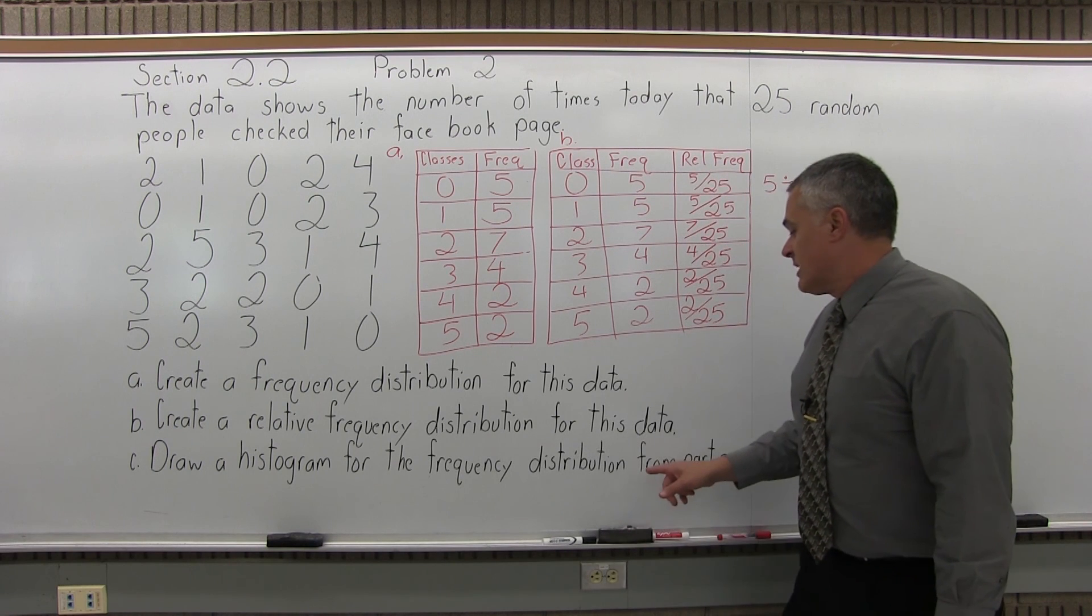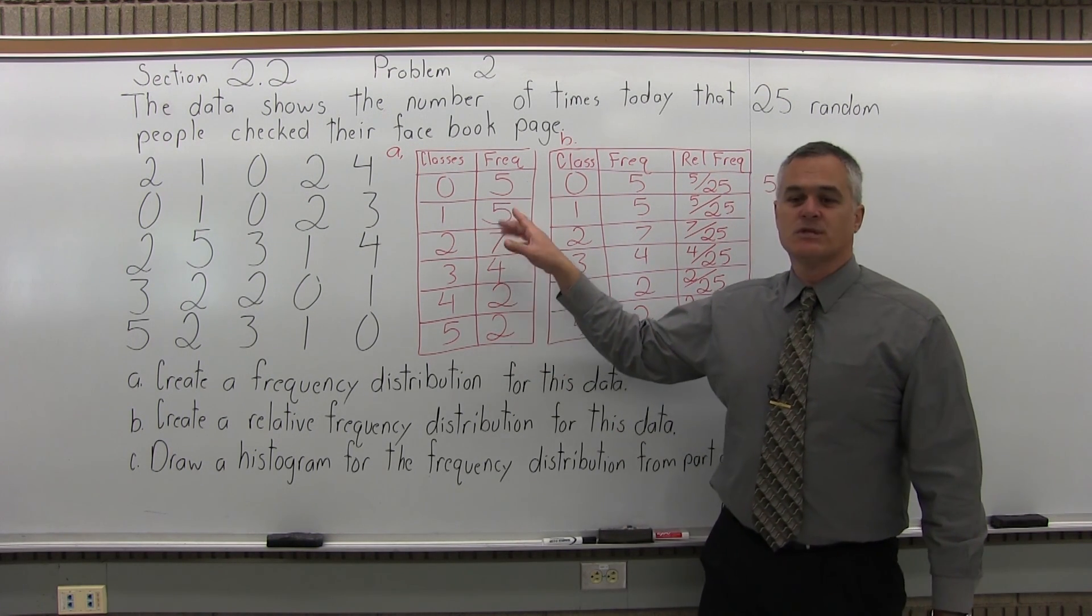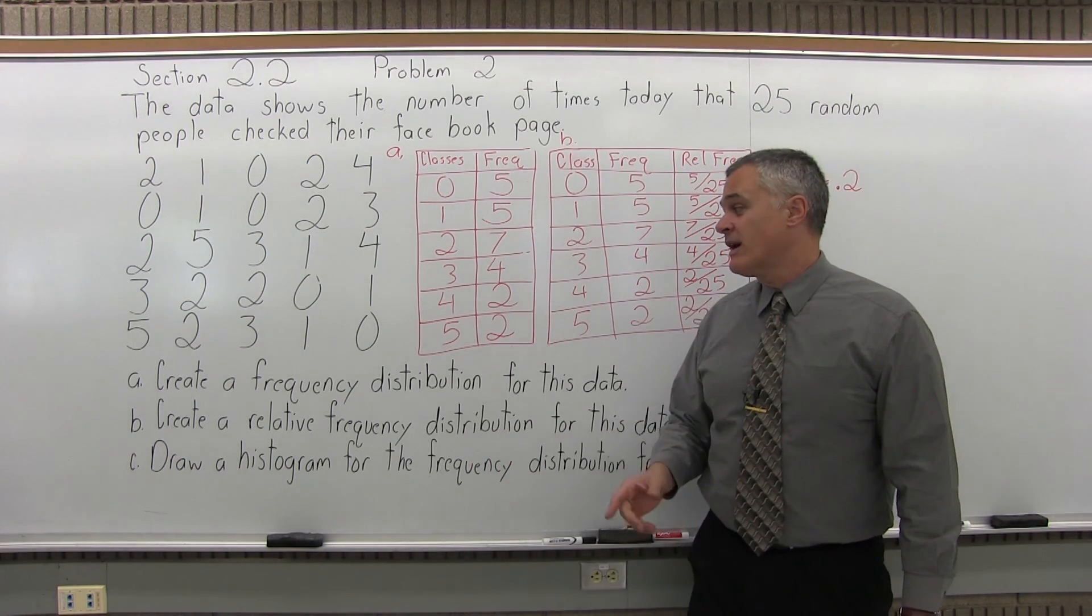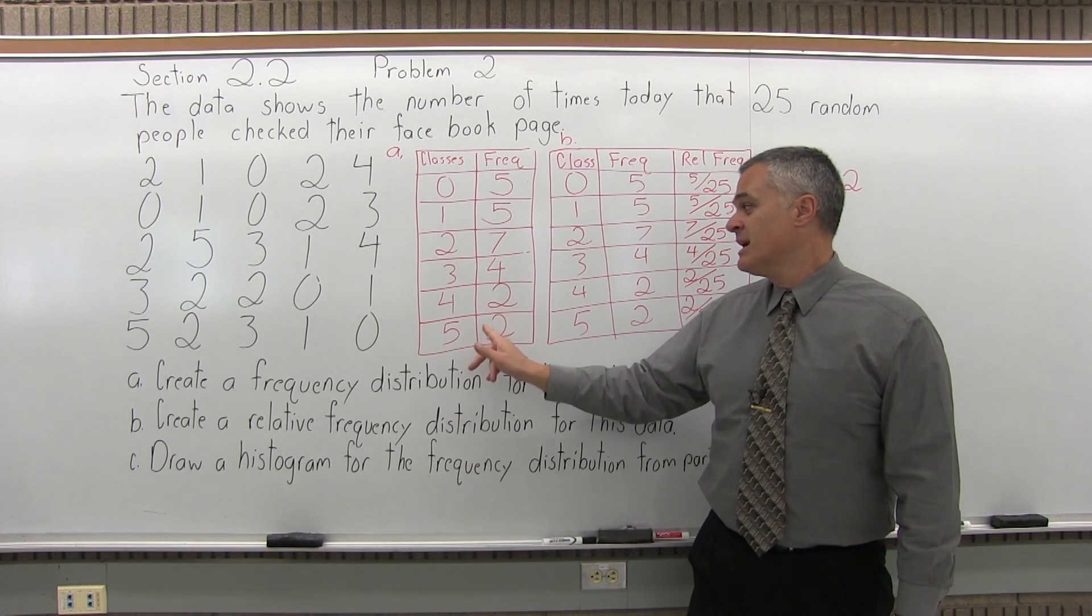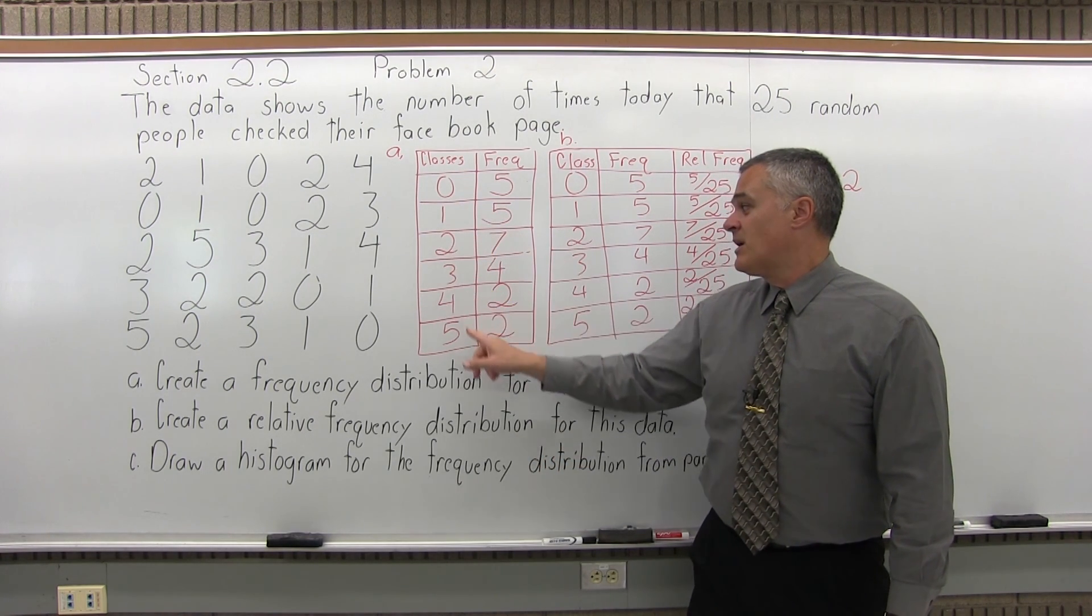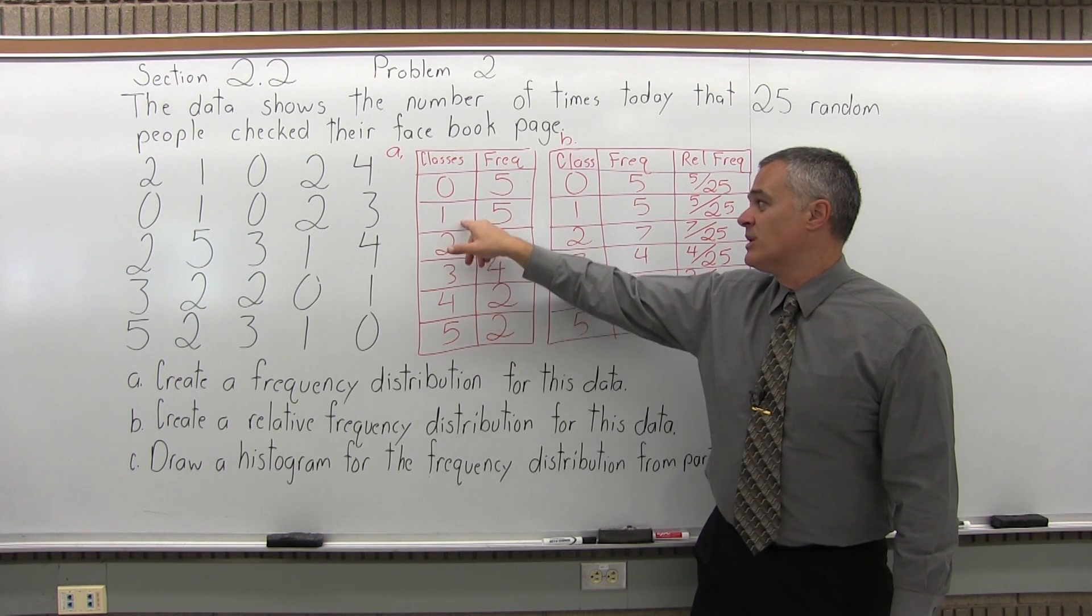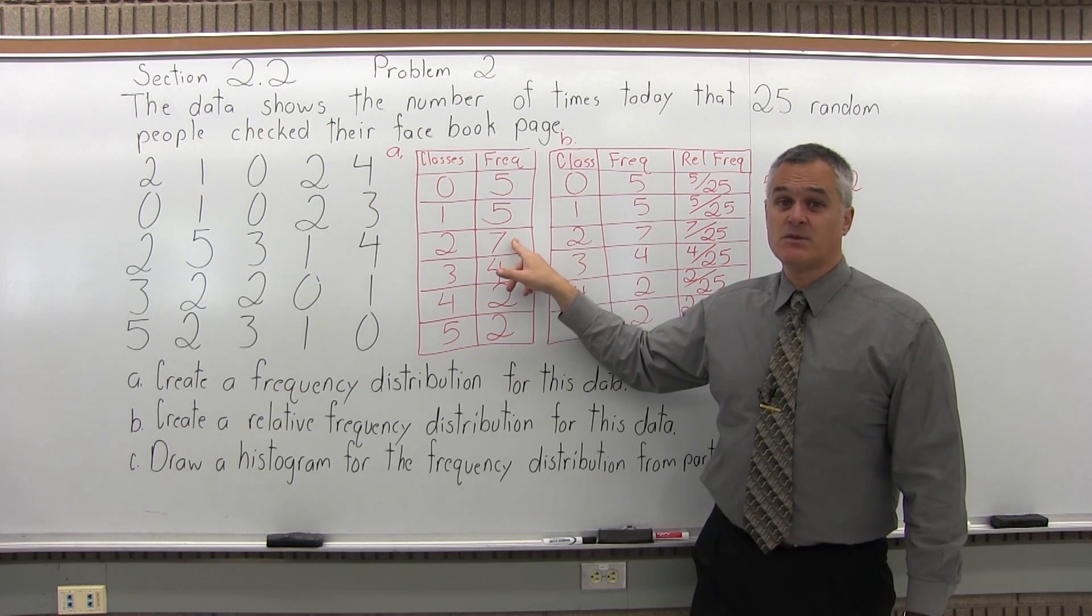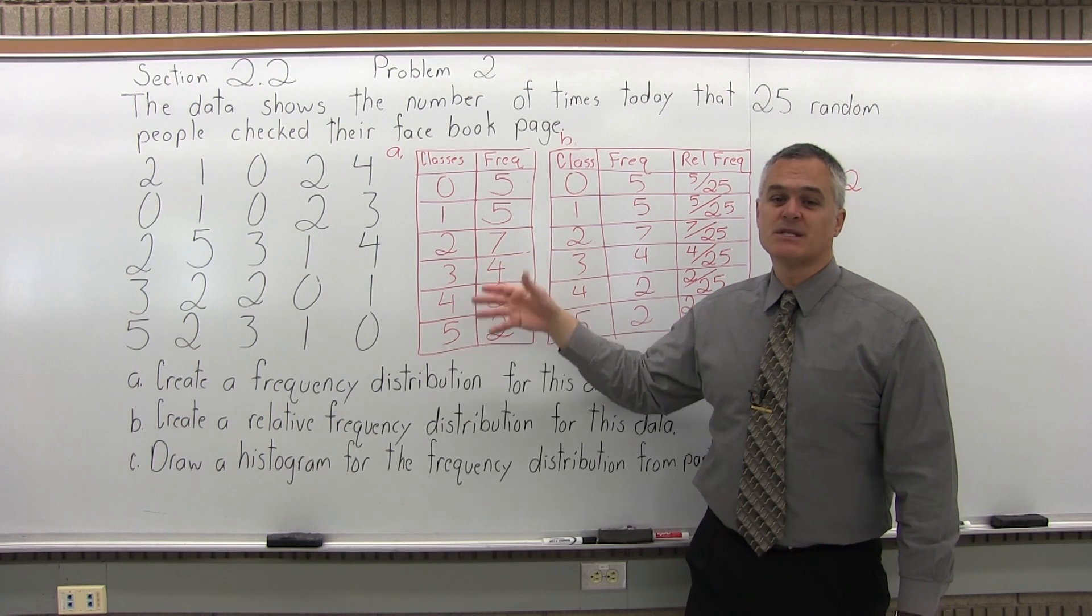Now the final part, part C, is draw a histogram for the frequency distribution in part A, just the frequencies, not the relative frequencies. Again, a histogram is a special type of bar graph. The bars must be vertical, as opposed to vertical or horizontal, only vertical for a histogram. And they have to touch, no spaces in between. So I'm going to have six bars. The zero through five will be the labels for the bars, the classes. The frequencies will be the heights of the bars. So my biggest bar will go up to a height of seven. You need at least seven little lines. One at a time is a sensible number scale.